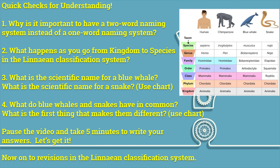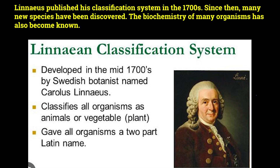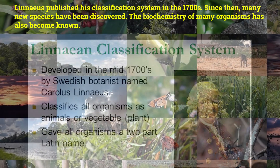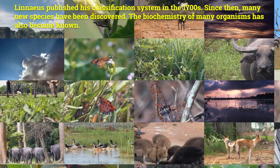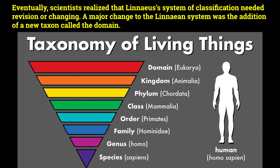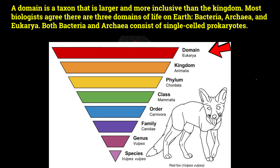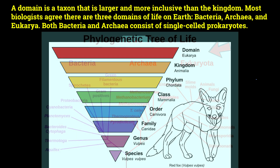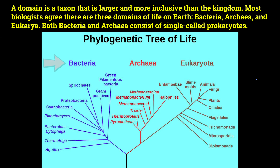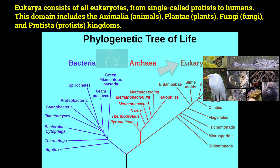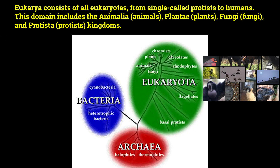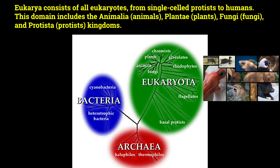Now on to revisions in the Linnaean classification system. Linnaeus published his classification system in the 1700s. Since then, many new species have been discovered, and the biochemistry of many organisms has also become known. Eventually, scientists realized that Linnaeus' system of classification needed revision. A major change was the addition of a new taxon called the domain — a taxon larger and more inclusive than the kingdom. Most biologists agree there are three domains of life on Earth: Bacteria, Archaea, and Eukarya. Both Bacteria and Archaea consist of single-celled prokaryotes. Eukarya consists of all eukaryotes, from single-celled protists to humans, and includes the Animalia, Plantae, Fungi, and Protista kingdoms.